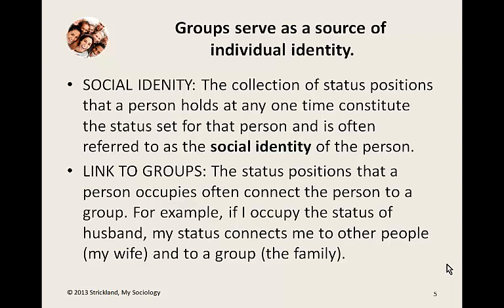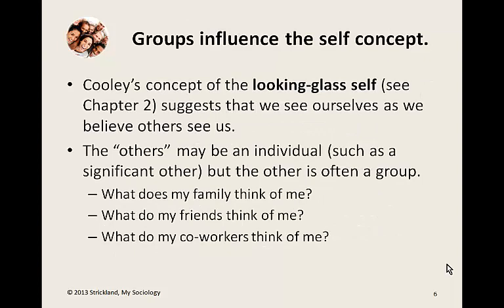Our social identity is connected to the status positions that we hold. But the statuses and roles themselves come from society, and the status positions we hold aren't just about us, but about other people with whom we interact day-to-day. For example, if I occupy the status of husband, that status connects me to other people — specifically my wife — and to a group, in this case the family. I'm a father because I have children, I'm a teacher because I have students, you're a student because you're enrolled in the university. Many of the status positions we hold connect us to groups we belong to, and since our status set serves as a big part of our social identity, those groups have a lot to do with who we understand ourselves to be.